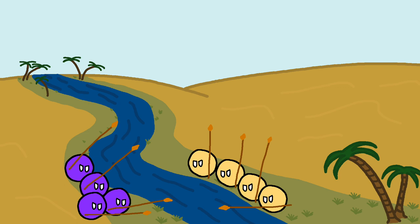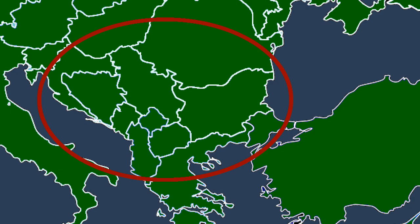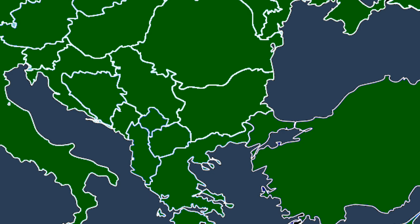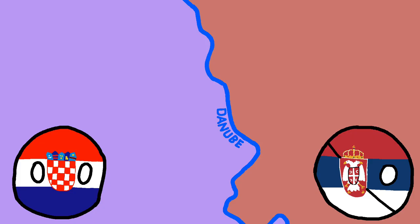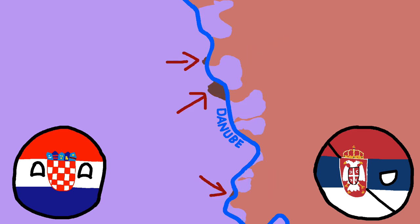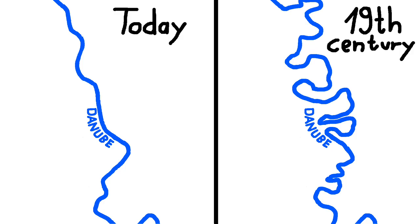And where else could the best example for this problem be found than here — the Balkans. More specifically at the border between Croatia and Serbia, where the Danube divides the two countries from each other. Or does it? Because if you ask Croatia, the borders should look different, with larger bits of Croatia on the river's east side and smaller bits of Serbia on its west side, reflecting the shape of the Danube from the 19th century.